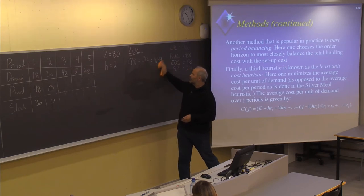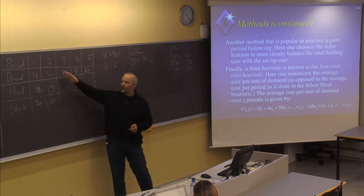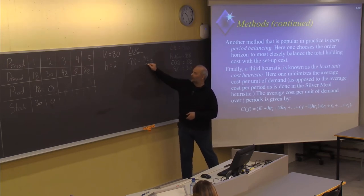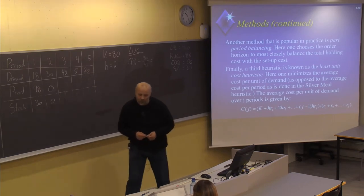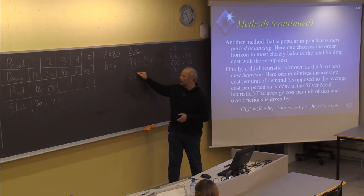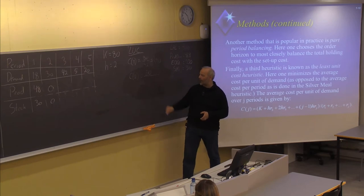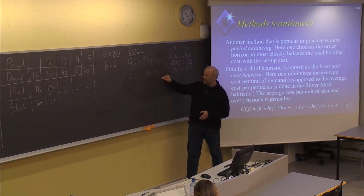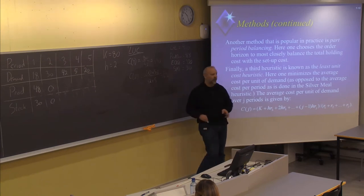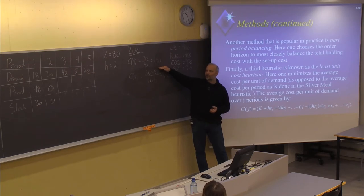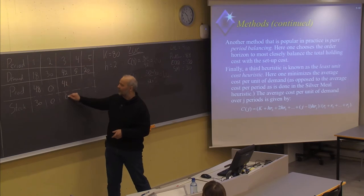Looking at period number three, the first option is to produce exactly 42 units. Setup cost of 80 divided by 42 gives 1.90. For the next option, C(2): 80 plus five units stored at cost of 2, divided by 42 plus 5, gives a unit cost of 1.92. We can see that this solution differs from the Silver Meal solution, because here we find that we should only produce 42 items in period number three and then have a new setup in period number four.